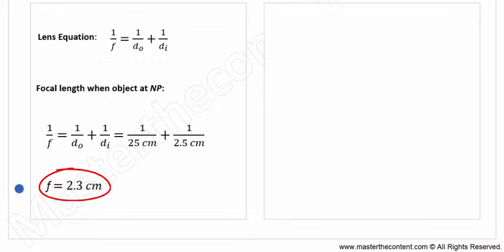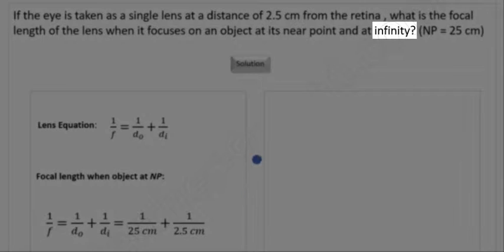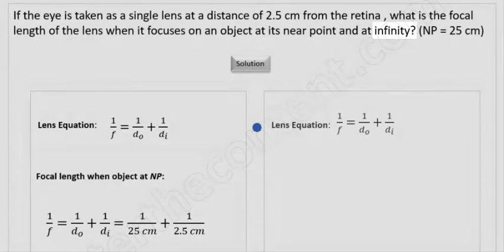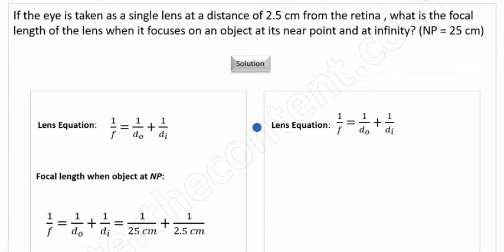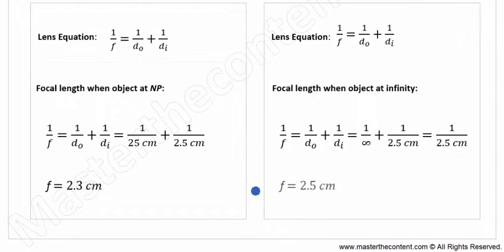Next, let's find the focal length of the lens when an object is located at infinity. And once again, we just take our lens equation and we fill in our values. The object is located at infinity and the image distance from the lens is 2.5 centimeters. And upon solving, we find that the focal length of the lens is 2.5 centimeters.